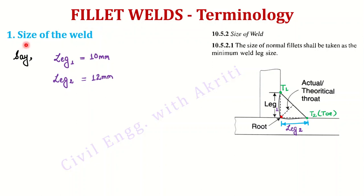The first term is size of the welds. Clause 10.5.2 defines the size of the welds, and clause 10.5.2.1 tells us what the size of the welds is. The size of normal fillets shall be taken as the minimum weld leg size.